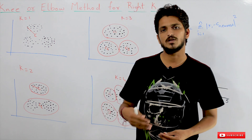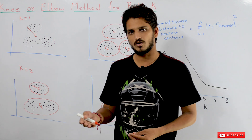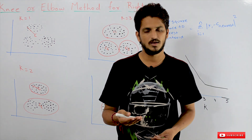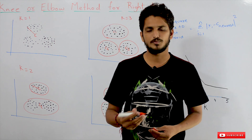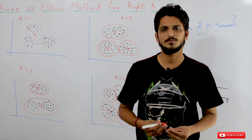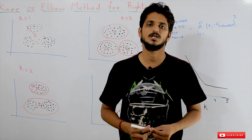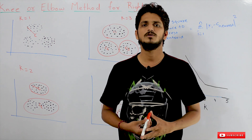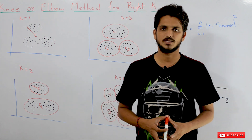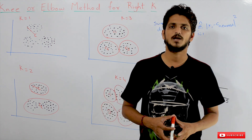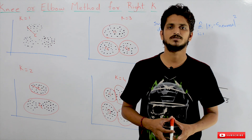This is how we identify the best K value using the knee or elbow method. There are many methods; in our next class we will discuss another method called the Silhouette method. Hope you understand the concept. If you have any questions, please post them in the comment section below. Thanks for watching — if you have not subscribed to our channel, please subscribe and press the bell icon for the latest updates. Thank you.